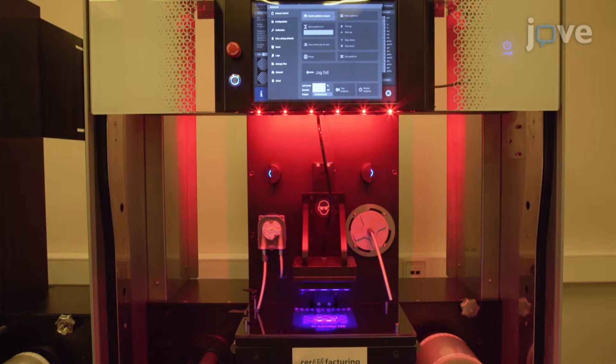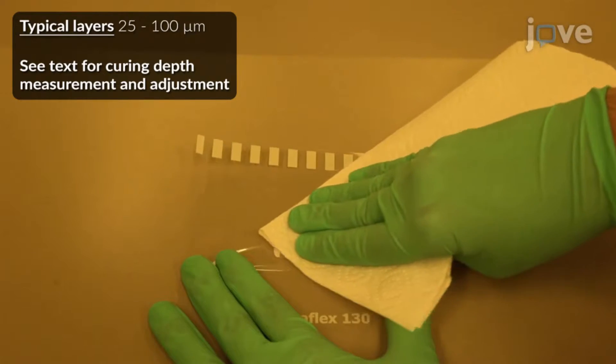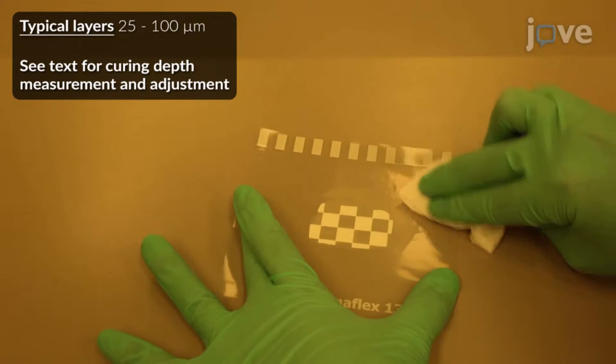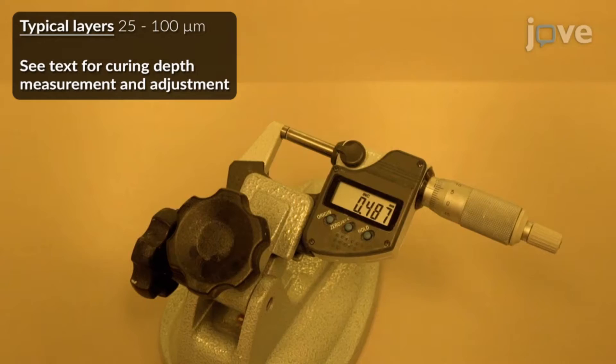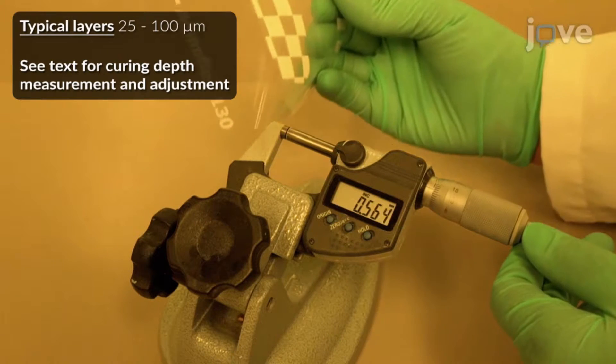Set up a digital light processing stereolithography printing device. Confirm that the curing depth is at least the same as the chosen building layers, and preferably several times thicker.